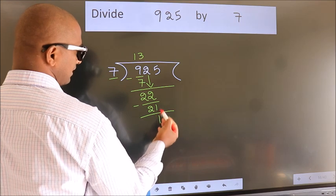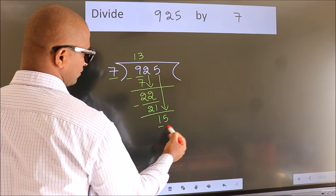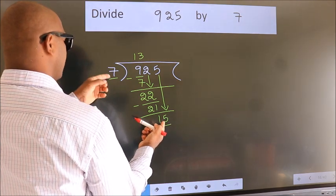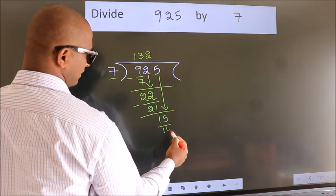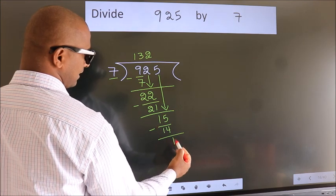After this, bring down the beside number. So, 5 down. So, 15. A number close to 15 in 7 table is 7 twos, 14. Now we subtract. We get 1.